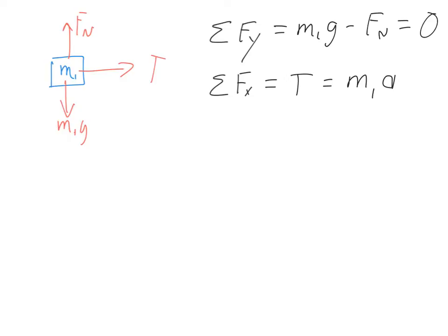So there's only one force in the x direction, T. So that will equal mass 1 times the acceleration. And we can do the same thing for the other mass. For that hanging mass, the only forces that exist are in the y direction. In fact, I should also put some labels up here that this was the forces on body 1.